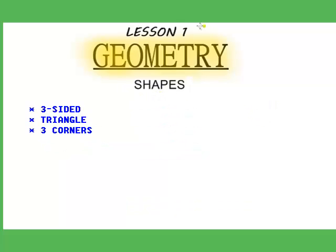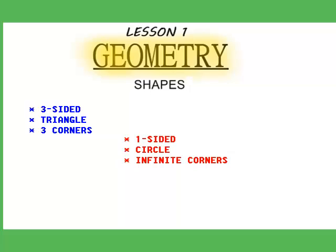Okay, so a three-sided shape is a triangle. Something round is a circle. And also, if you want to know, for your own interest, a circle has infinite sides — or infinite corners, sorry. A triangle has three corners, but a circle has one side. Or you can call it infinite sides if you want, but I like to call it one side.